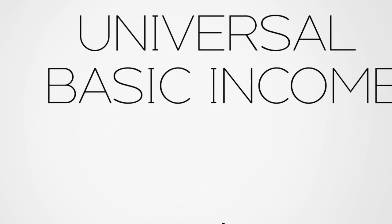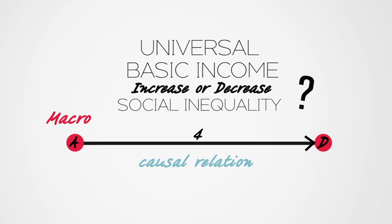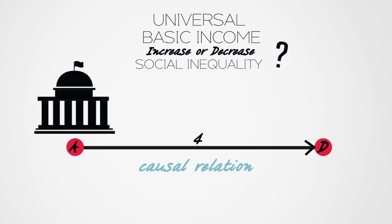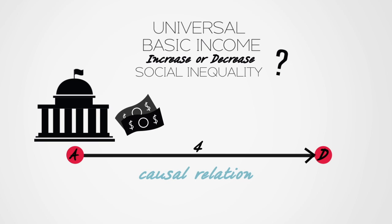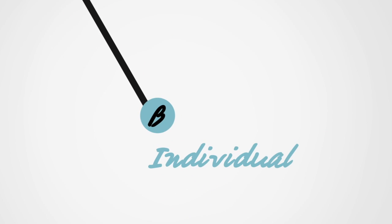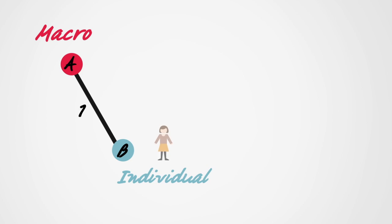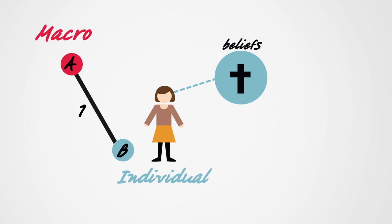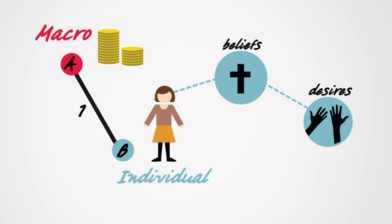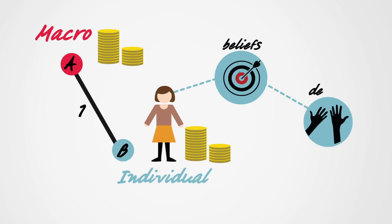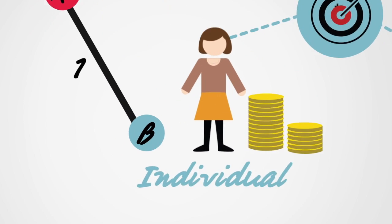Does universal basic income increase or decrease social inequality? This is a causal claim about macrosocial facts that can be used as an illustration. In the diagram, the introduction of basic income by the government would be node A, and the change in social inequality would be node D. Arrow 4 would represent the suggested causal relation. The relevant micro-agents would be individuals and families. The first step in reconstructing the mechanism is to figure out how the macro-change influences an individual — this is arrow 1. The macro-change can transform the opportunities and incentives of the individual, and can also influence her beliefs or desires. For example, the introduction of basic income could change the individual's level of income, her relation to welfare bureaucracy, and her beliefs about what is expected from her. It is also possible that basic income changes the skills and abilities of the individual by influencing her educational choices. All these multiple influences are registered at node B.